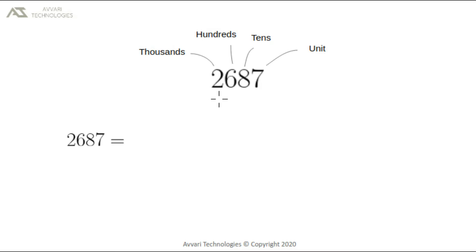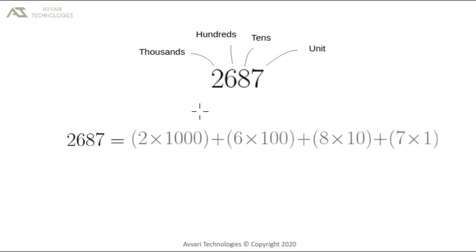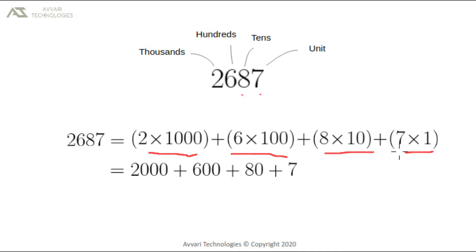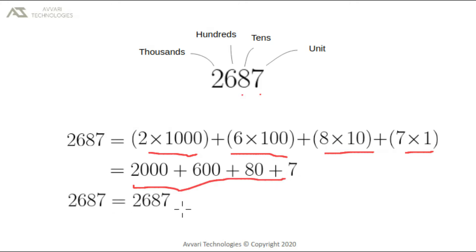2687 could be written as two into thousand plus six into hundred plus eight into ten plus seven into one. Two into thousand is two thousand, six into hundred is six hundred, eight into ten is equal to eighty, and seven into one is equal to seven. When we add all these numbers, we will get 2687. So we can represent a number in this fashion as well.